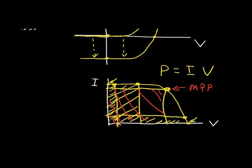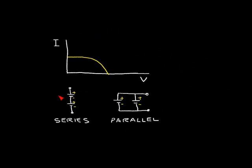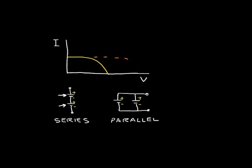Let's look at another aspect of the solar cell. If we connect two solar cells in series — each with a positive and negative terminal — we increase the voltage. Plotting the I-V curve for this series combination, the curve shifts to the right and the area under the curve approximately doubles, meaning we have doubled the extractable power.